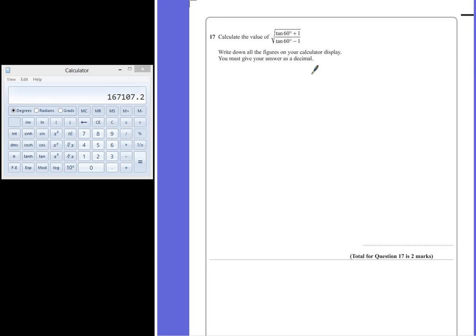Question 17. Calculate the value of the square root of tan 60 plus 1 divided by tan 60 take away 1. Write down all the figures on your calculator display. You must give your answer as a decimal.